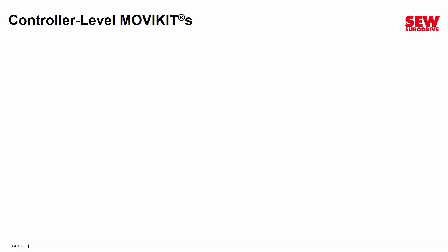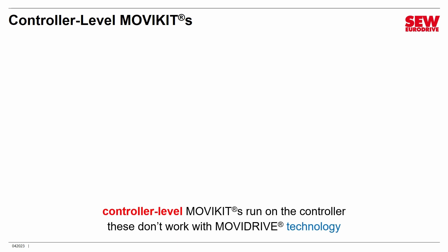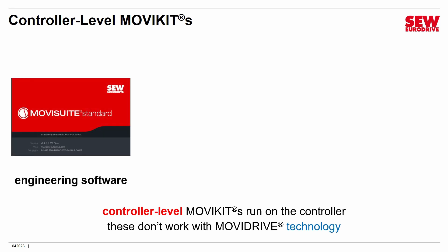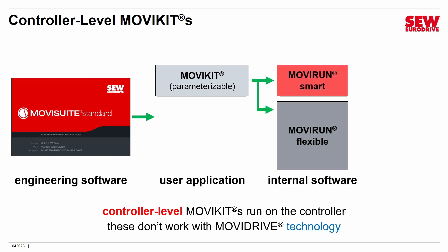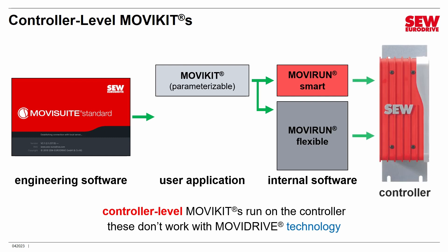Controller level MoVC kits run on the controller — they can't be used with MoVDrive technology since it has no controller. They run on the controller typically found in a MoVDrive system or MoVDrive modular installation, and you set them up using MoVSuite. Parameterizable MoVC kits are the simplest: set a few parameters and that becomes your user application. It then runs on either MoVRun smart or MoVRun flexible software in the controller, which manages the VFDs and access modules over the EtherCAT SBUS Plus network.